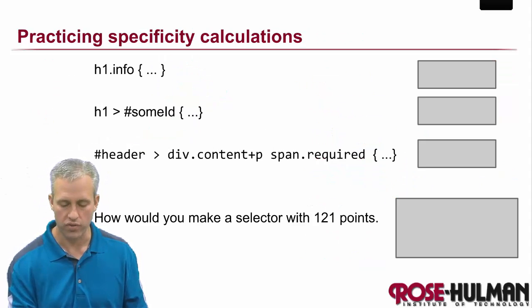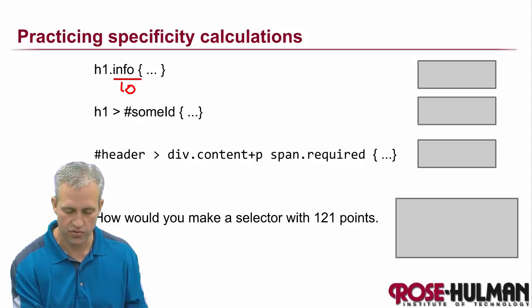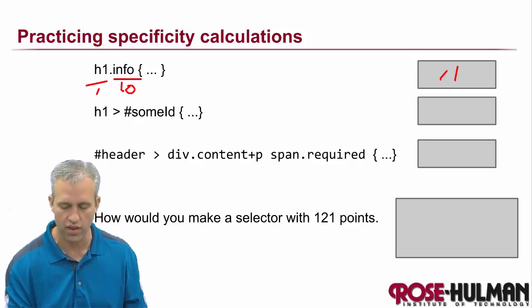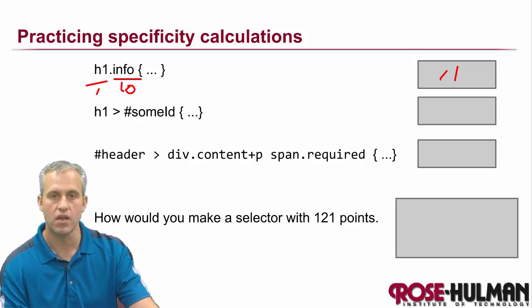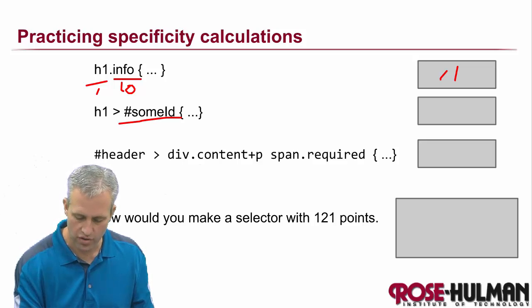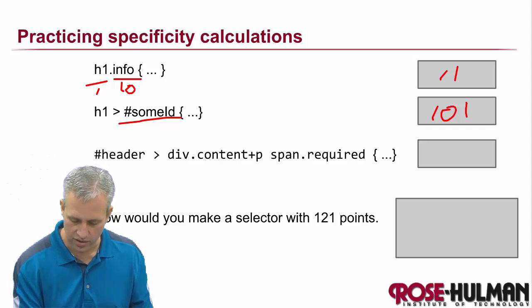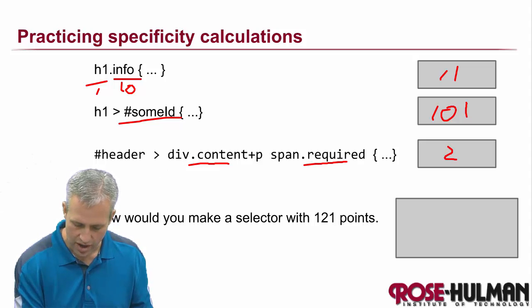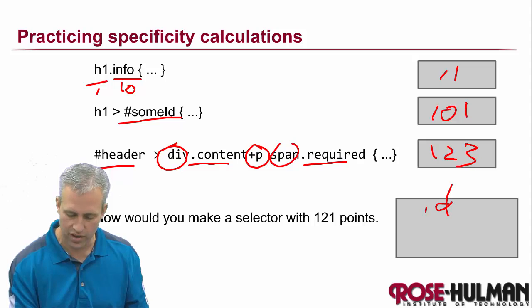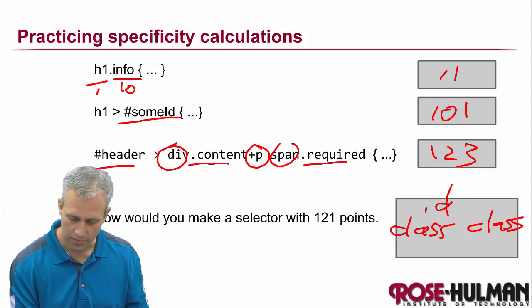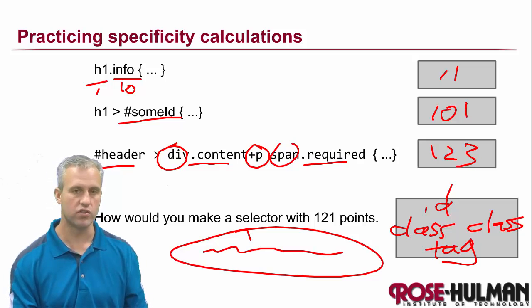Let's do some examples. The first one has a class for 10 and a tag for 1, so the answer is 11. Go ahead and pause the video to answer the others. Coming back: the next one has an ID (100) and a tag (1) — that's 101. The last one has two classes (20), one ID (100), and three tags (3), totaling 123. And if you wanted to make a 121, you'd have one ID, two classes, and one tag.